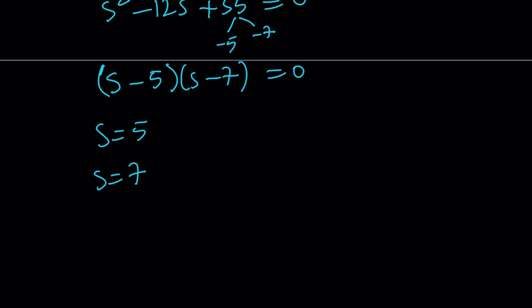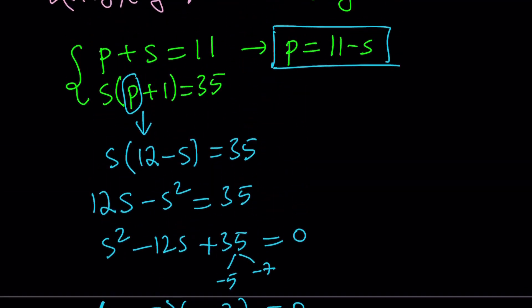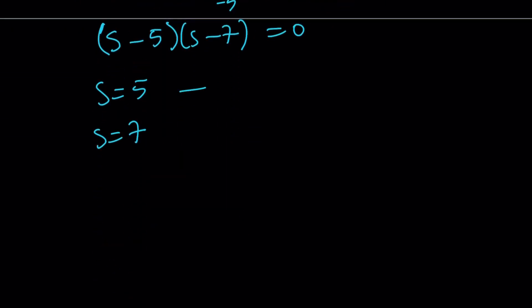Great. So we were able to find s, which means we can also find p from here because we know that s+p = 11. Or we can use this identity, p = 11-s, which means if s = 5, p = 6. If s = 7, p = 4 because their sum always needs to be 11.